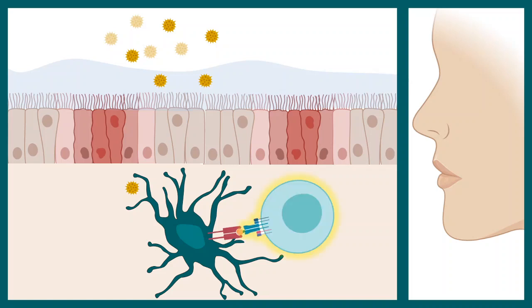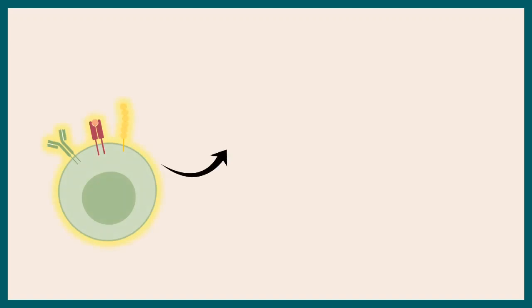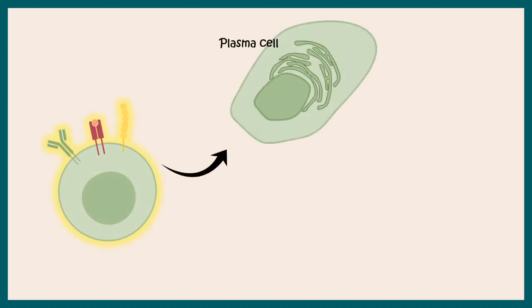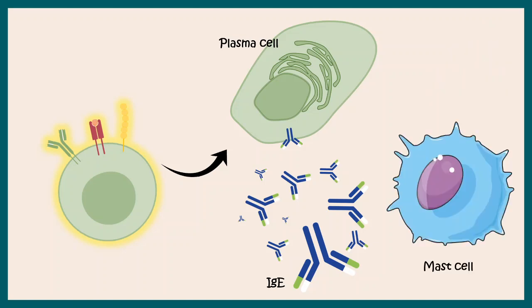This leads to activation of T cells, and T cells secrete several cytokines which are pro-inflammatory in nature, causing reddening and an itchy sensation in the nose area. Further, the T cell can activate B cells, and B cells can get converted into IgE-secreting plasma cells. IgE antibodies are the key agents in this allergic response.